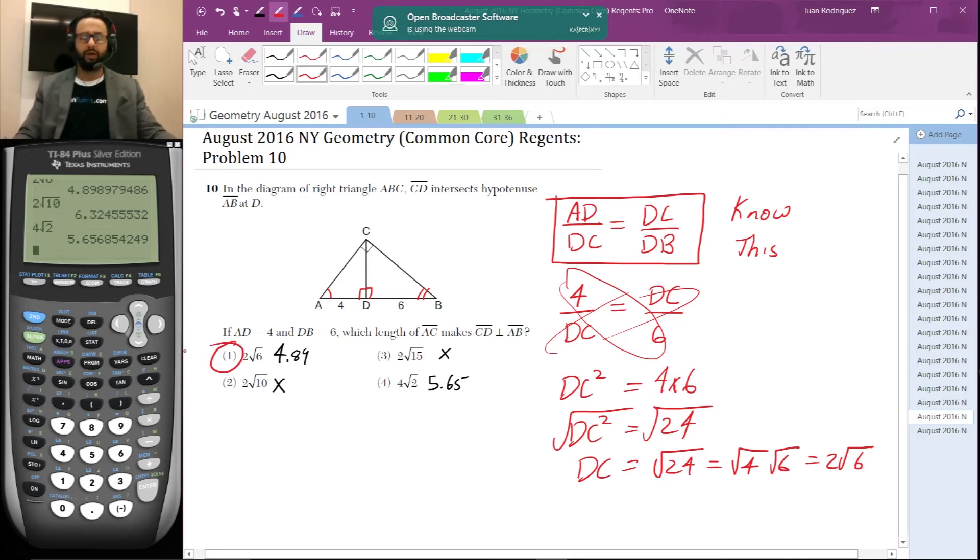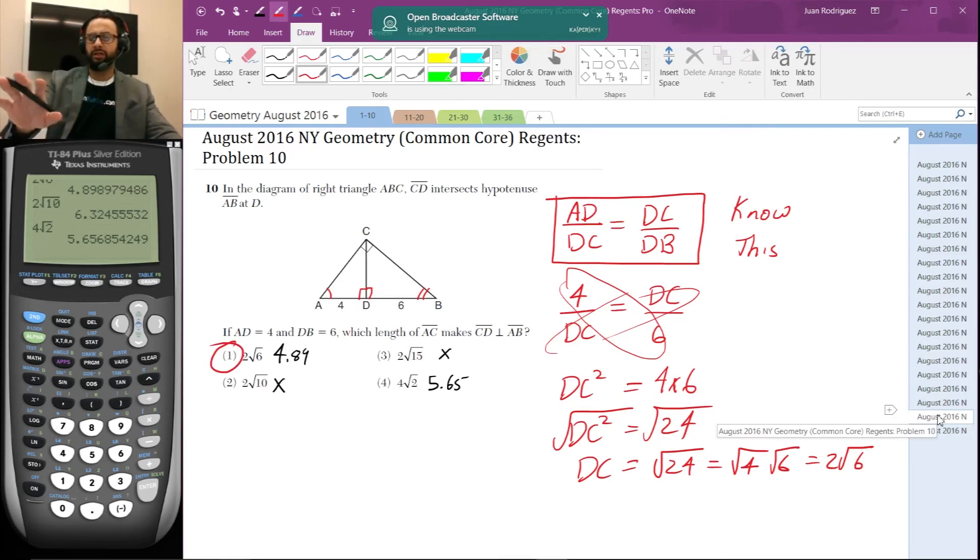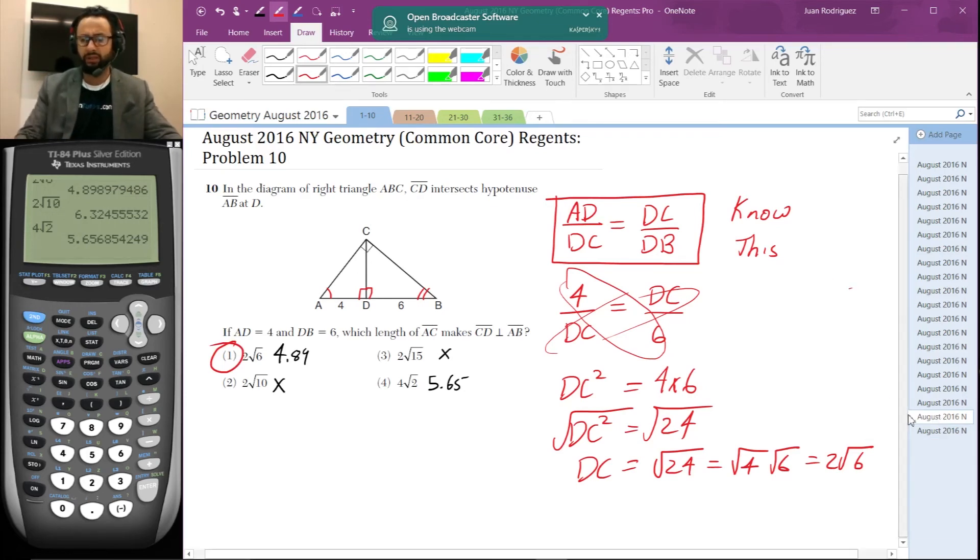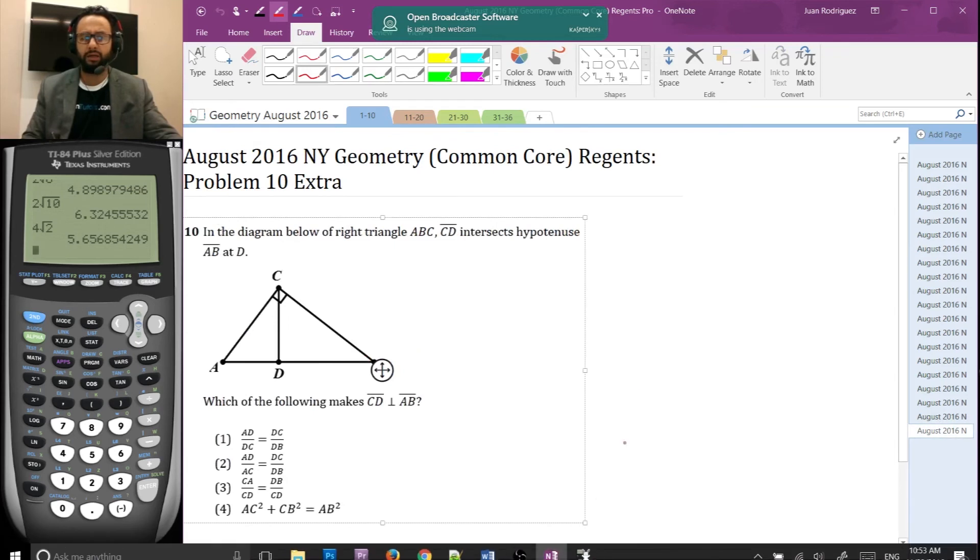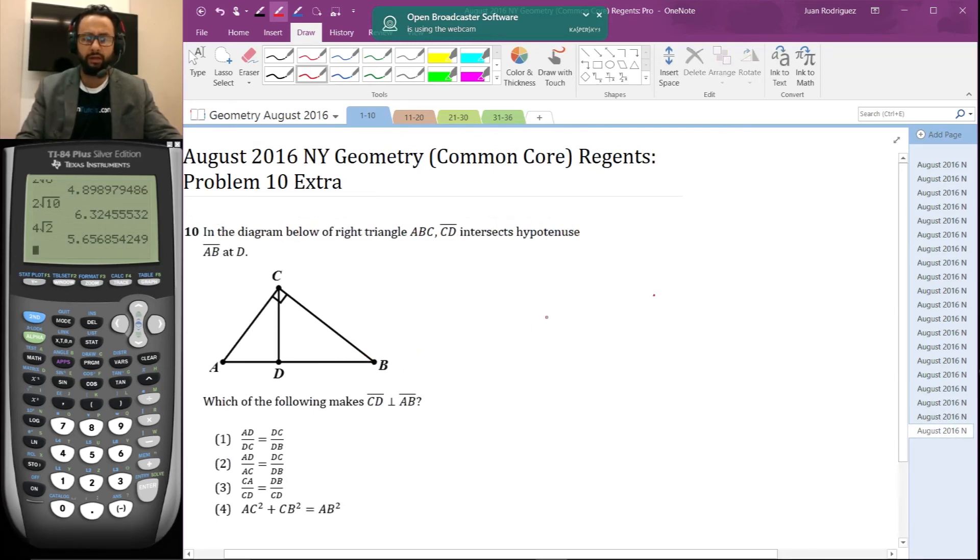Okay. So DC is equal to two square root of six. So that's definitely the answer. So if you're looking for just that answer, definitely hit the like button. You can go on to the next video, but we did create a practice problem for you guys to look at and try out on your own.